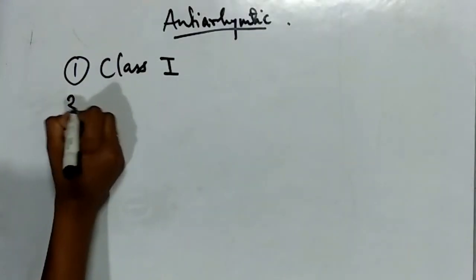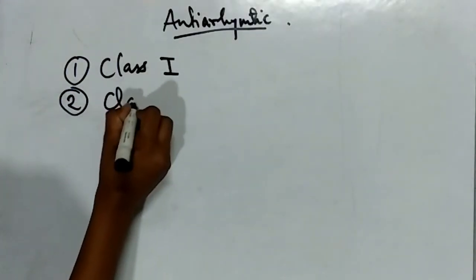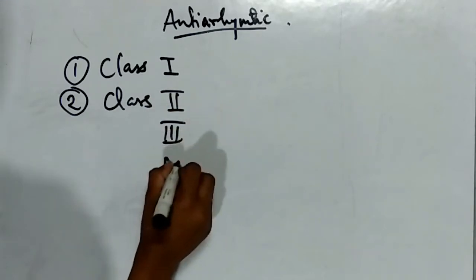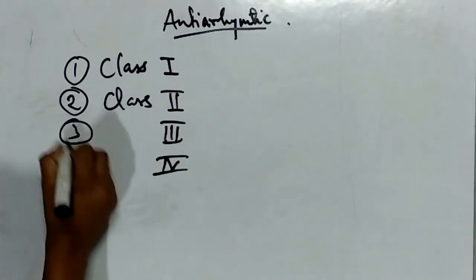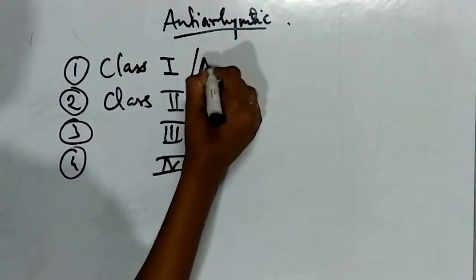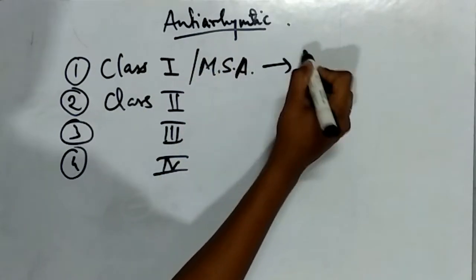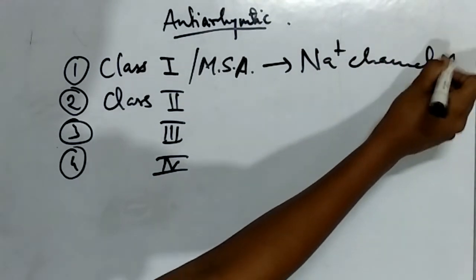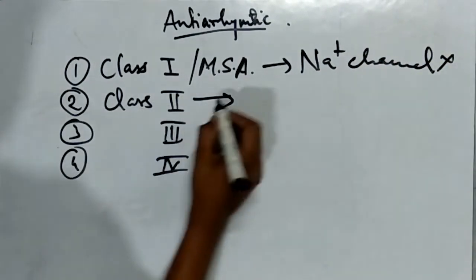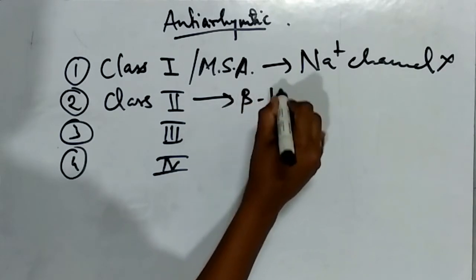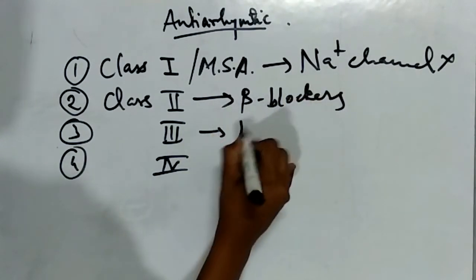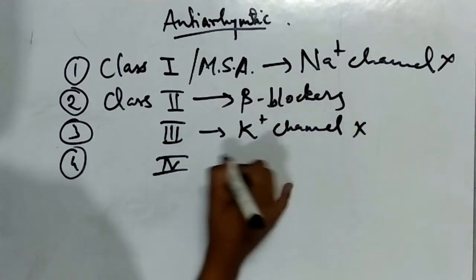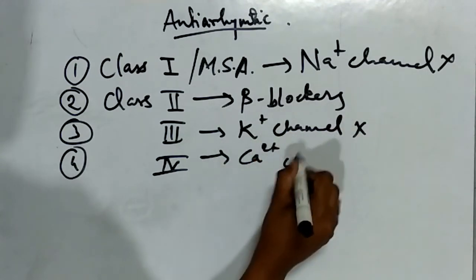Now we will see what are anti-arrhythmic drugs. There are 4 classes: class 1, class 2, class 3, and class 4. Class 1 is membrane stabilizing agents that block sodium channels. Class 2 drugs are beta blockers. Class 3 drugs are potassium channel blockers. Class 4 drugs are calcium channel blockers.